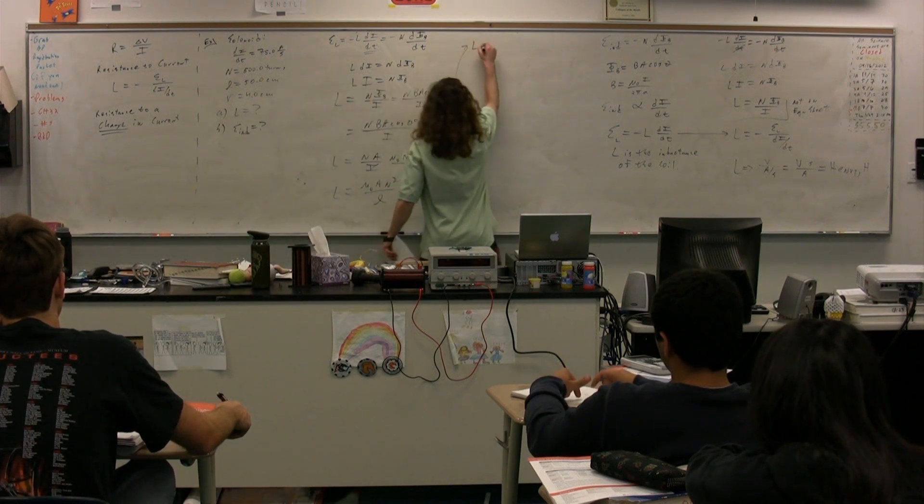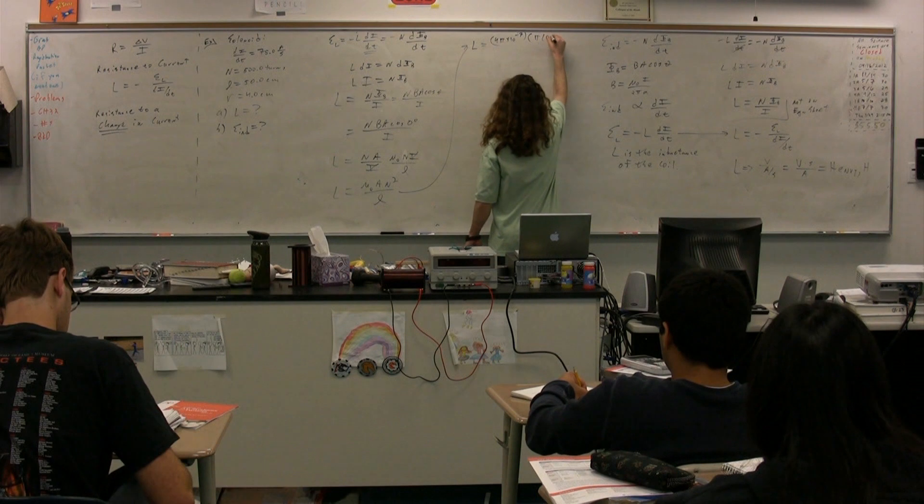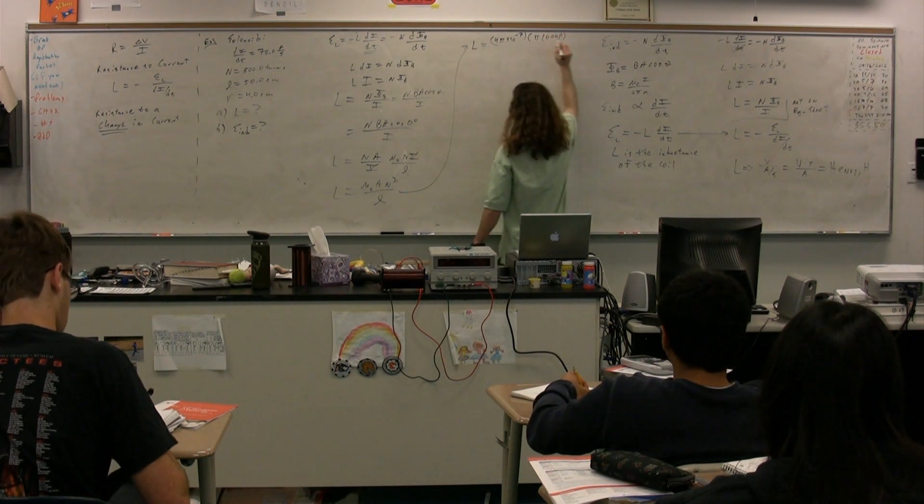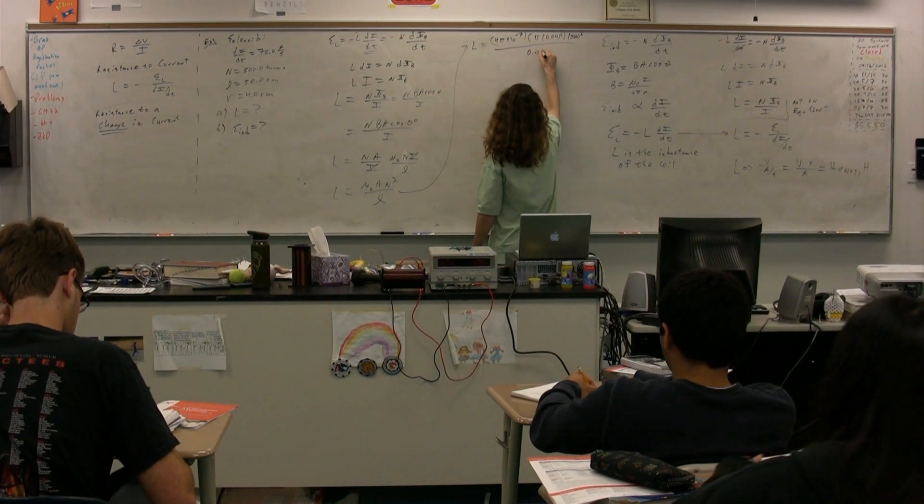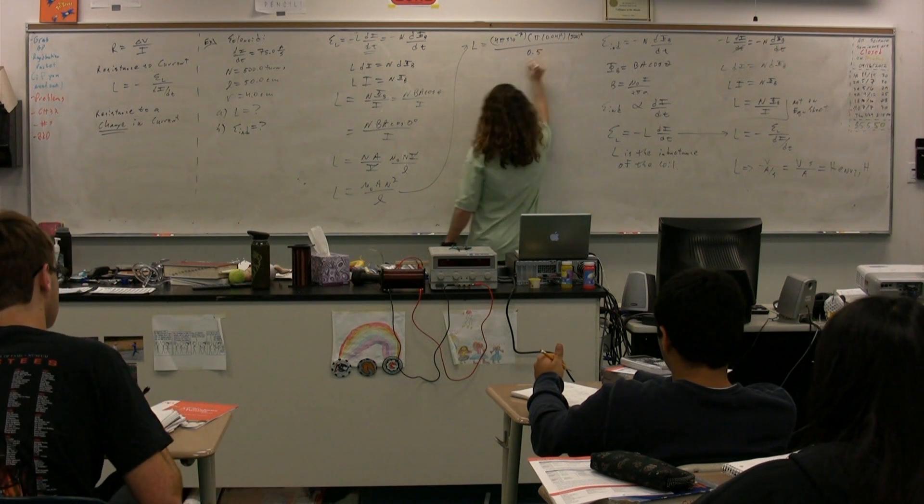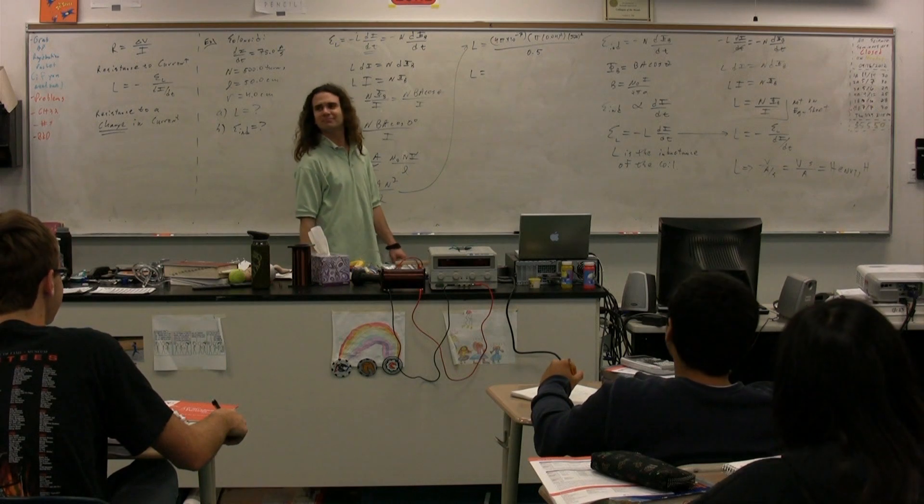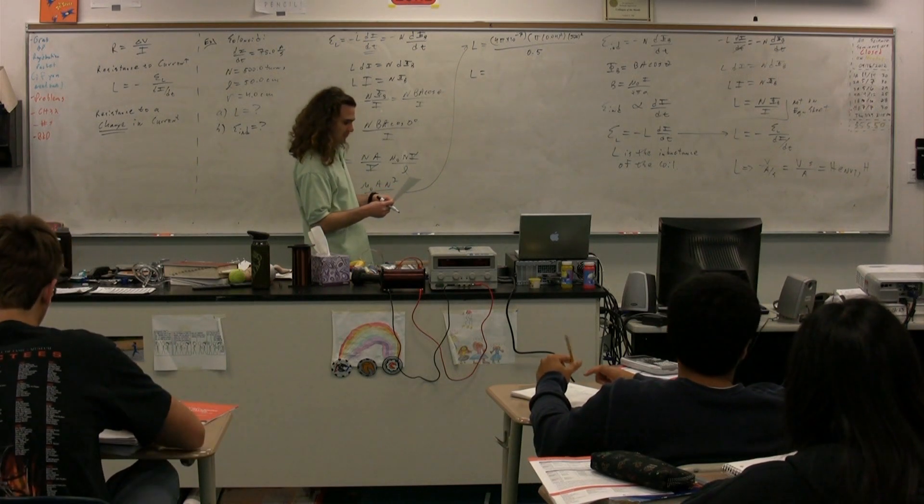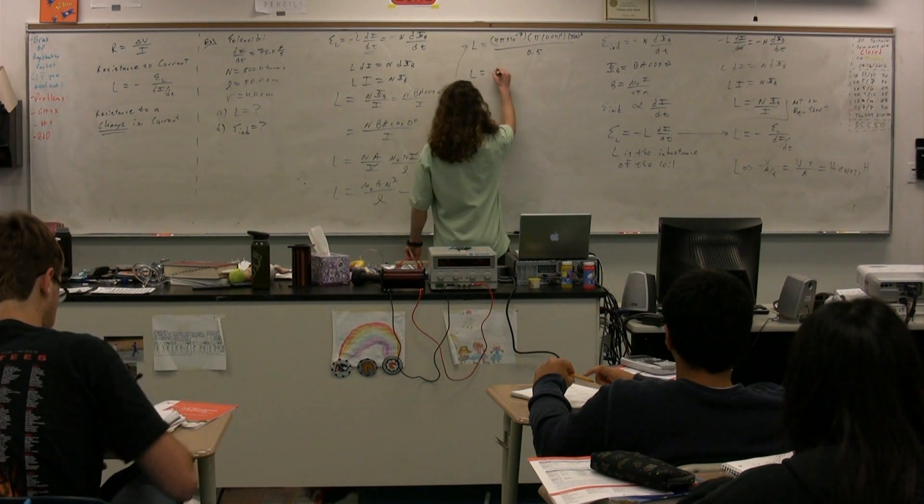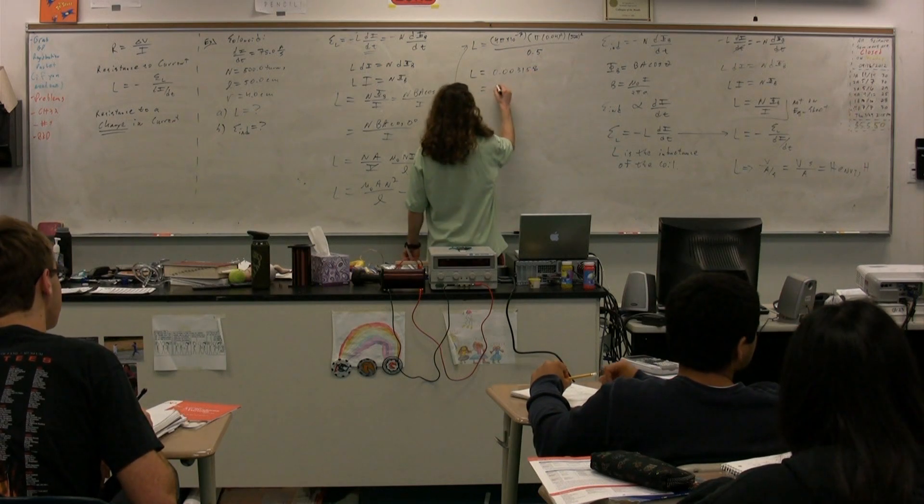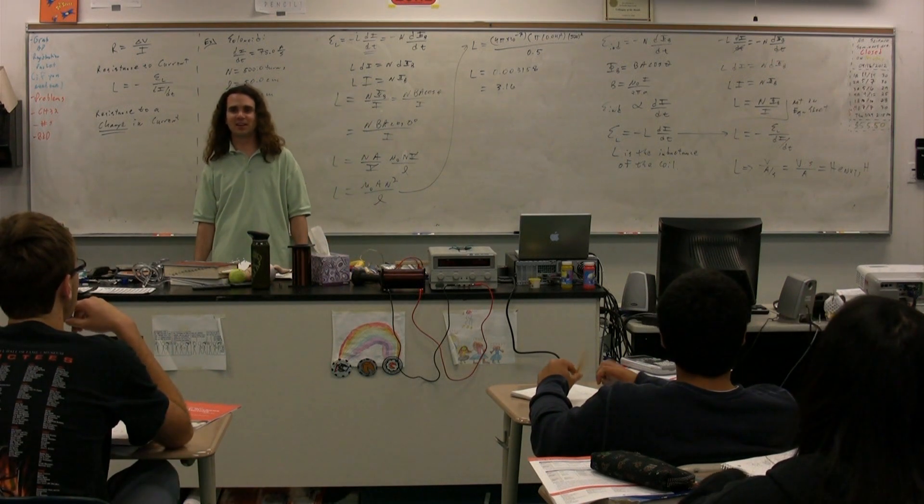We can now plug in numbers. So first, we have the self-inductance is equal to mu naught, 4 pi times 10 to the negative 7, multiplied by the area, which is just going to be pi times 0.04 squared, multiplied by n, which was 500 squared, divided by l, which was 0.5. This equals 3.16. What are the dimensions? Millihenries.